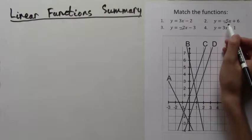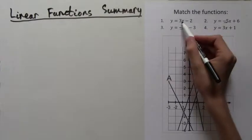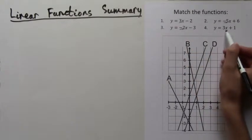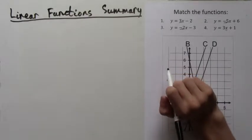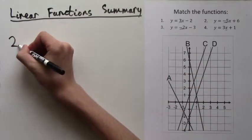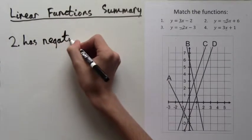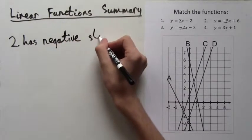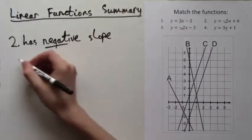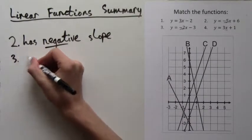We have two negative slopes and two positive slopes. So we know that function 2 has a negative slope, which is negative 5, and function 3 also has a negative slope, which is negative 2.